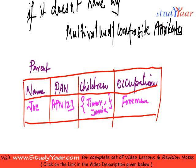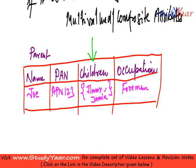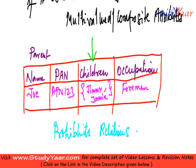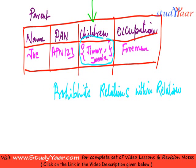Just understand that my children is a multi-valued attribute. So this relation is not in first normal form. Another way to look at first normal form is that it prohibits relations within a relation. You can think of Jimmy and Jamie as forming a relation within the children attribute.